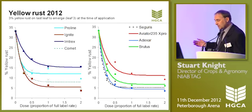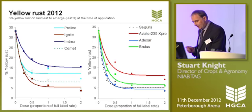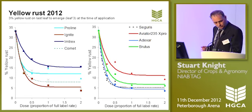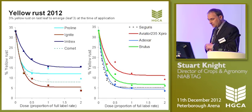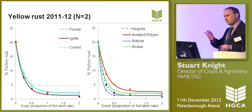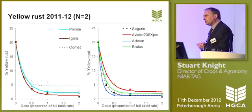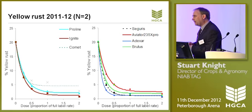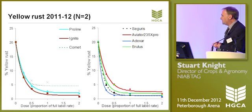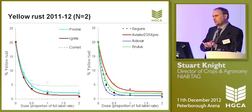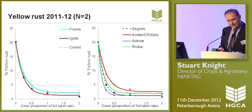In terms of the two-year picture, 2011 was a slightly lower yellow rust pressure and basically the products are much closer together. But the overall rank order of performance is relatively similar — epoxiconazole or the epoxiconazole-based SDHI mixtures are leading the pack.